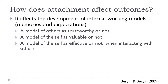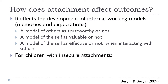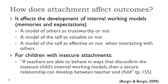One question that comes up is: if a teacher has a student who views others as untrustworthy and believes he is ineffective in interacting with others, can teachers do anything about this? Researchers have found that for children with insecure attachments, if teachers behave in ways that disconfirm the insecure child's internal working models, then a secure relationship can develop between the teacher and the child. That's good news for teachers, because it indicates they have some control over the success of their relationships with their students.